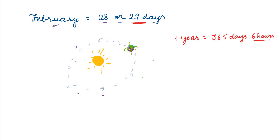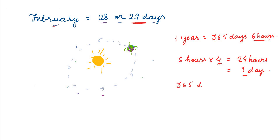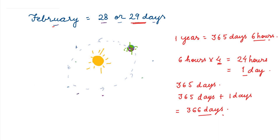These extra 6 hours are collectively added after every 4 years. 6 hours times 4 equals 24 hours, which is one day. So every 4th year gets one extra day, making it 366 days. We call this a leap year. In the leap year, February has 29 days instead of the usual 28.